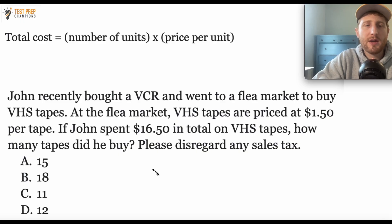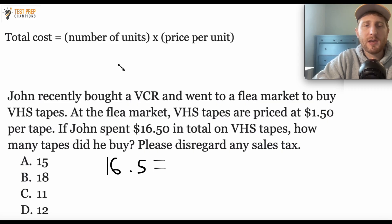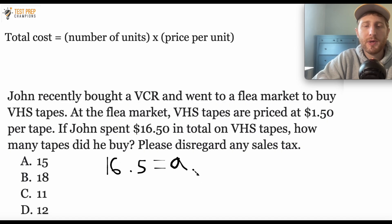I'm going to break this down using the formula. We know the total cost is $1,650. So where it says total cost, I'll write $1,650. So $1,650 equals the number of units times the price per unit. We don't know the number of units — that's what we're trying to find — so I'll call that A. You could call it X or Y, it doesn't really matter. The price per unit we know is $1.50.